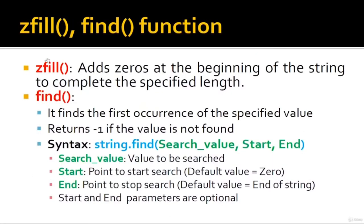zfill adds zeros at the beginning of a string to complete a specified length. The find function finds the first occurrence of a specified value and returns minus one if the value is not found. The syntax is string.find(search_value, start, end) — it accepts three parameters: the value to search, the start position (default 0), and the end position (default end of string). Start and end parameters are optional.